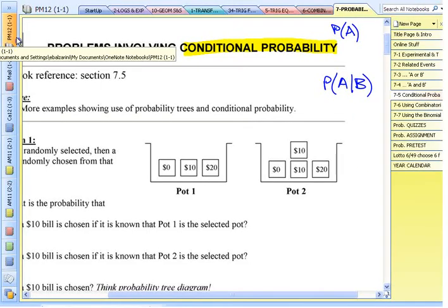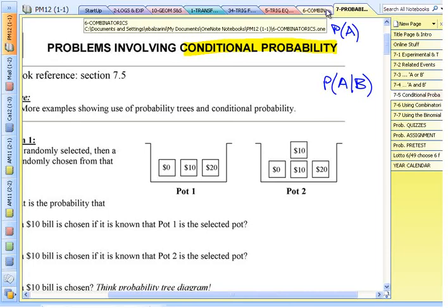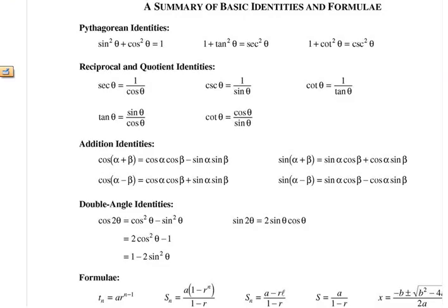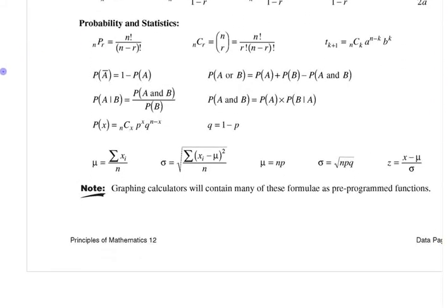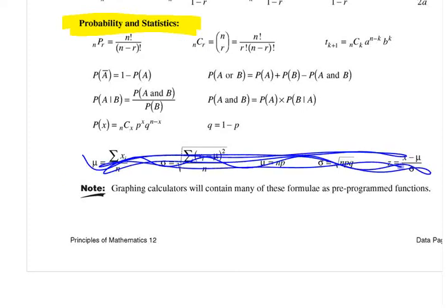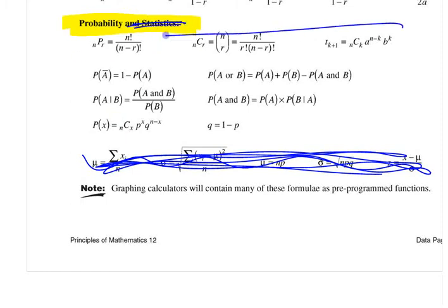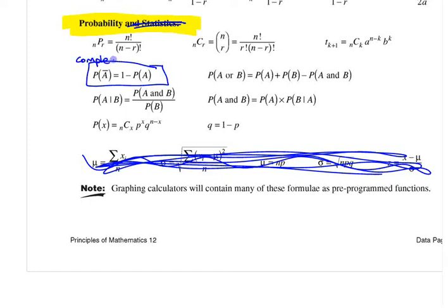On your formula sheet — the one I give you on tests — I want to point out the relevant formulas. There used to be a unit called statistics, which is why some of these may appear. These three were for combinatorics. There are also some probability formulas here, including this one that deals with the complement.